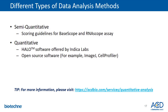In general, RNAscope data analysis methods can be divided into two major categories: semi-quantitative, also known as manual scoring, or quantitative image analysis using software such as HALO. My colleague Amber, our image analysis scientist, will expand on the quantitative image analysis during her session.